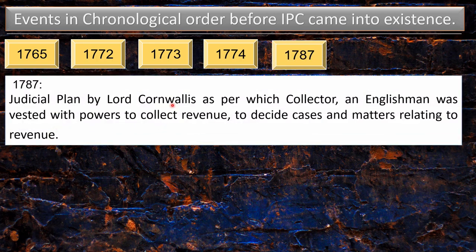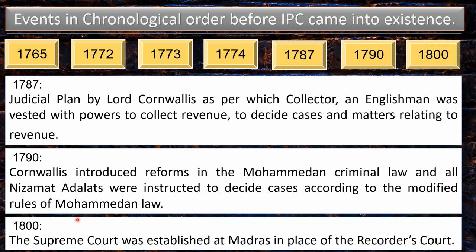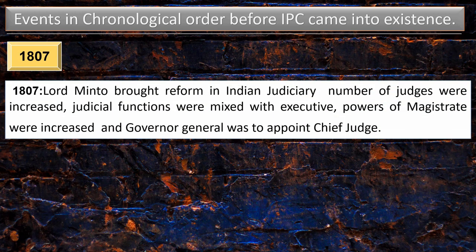Then in 1790, Lord Cornwallis introduced reforms in Mohammedan criminal law and all Nizamat Adalats were instructed to decide cases according to the modified rules of Mohammedan law — this can be considered the first step when reform in Indian law truly started. Then around 1800, the Supreme Court was established at Madras in place of the Recorder's Court. Then in 1807, Lord Minto brought reforms to the Indian judiciary: the number of judges was increased, judicial functions were mixed with executive, powers of the Magistrate were increased, and the Governor General was to appoint the Chief Judge.